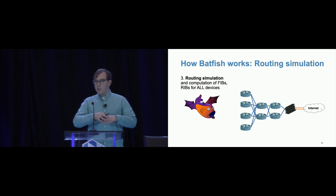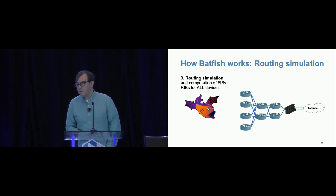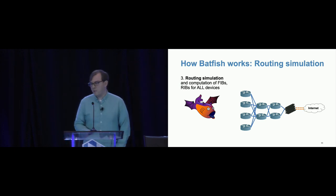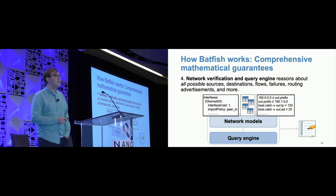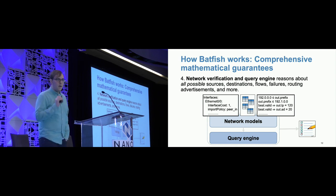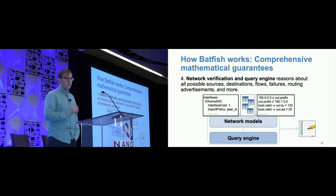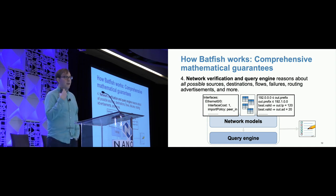Now that we've built a unified model of all your network devices and know how they're connected, we can do a routing simulation — actually simulating the routing of all protocols running in your network. We get the RIBs and FIBs for all devices and know how traffic will flow. Finally, we have a network verification and query engine that models your network and network policy as a system of mathematical equations. We can reason about all possible traffic sources, destinations, actual flows, failures, and route advertisements, and ensure your policy is honored under all conditions.